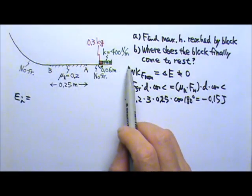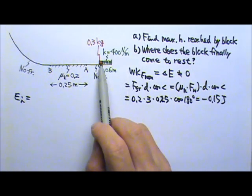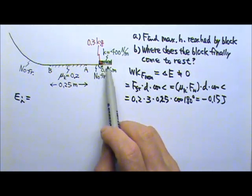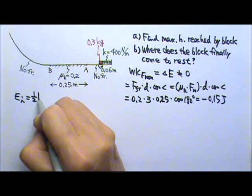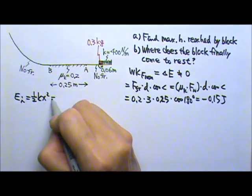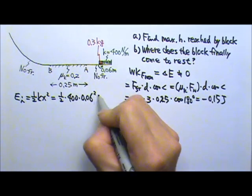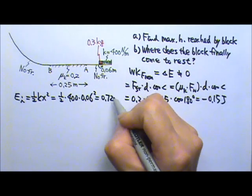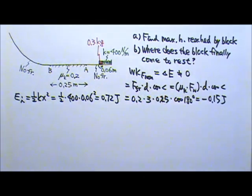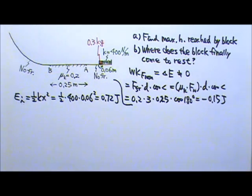So no kinetic energy. This is the low position, so if I choose this point as the reference point ground, then this block has no mgy at the beginning. But there is a spring that is compressed. So there is 0.5 kx squared. And that's 0.5 times 400 times 0.06 squared, and that gives us 0.72 joules. So this is the initial mechanical energy.